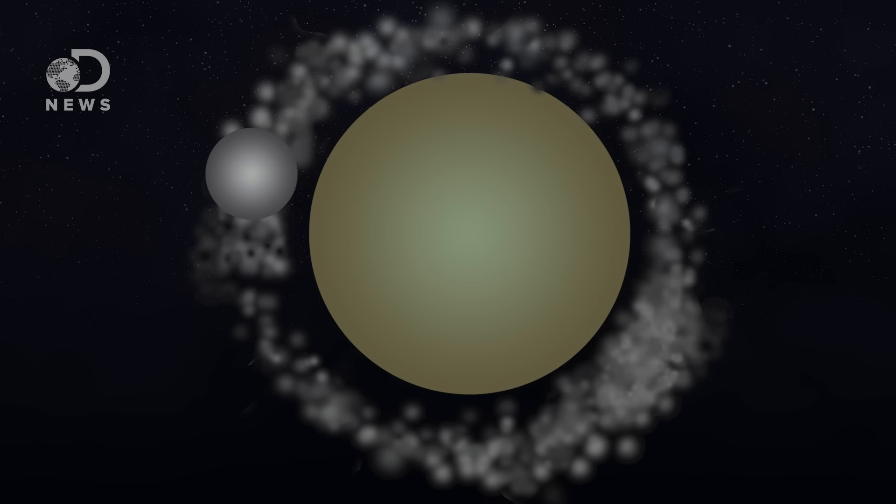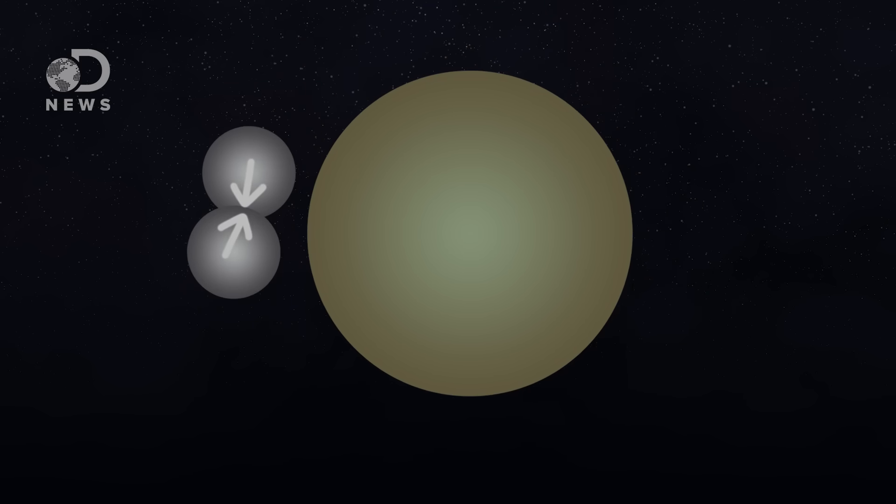The moon bits would interact in space, sometimes causing them to be ejected or collide with Earth again, and occasionally they'd come together and form something greater, like an orbiting moon fragment megazord.